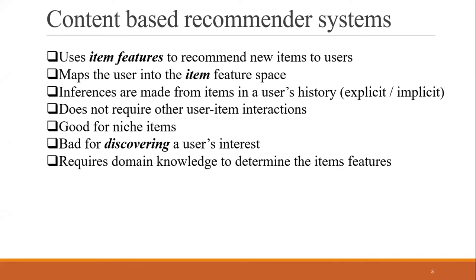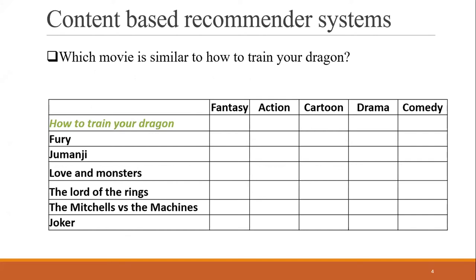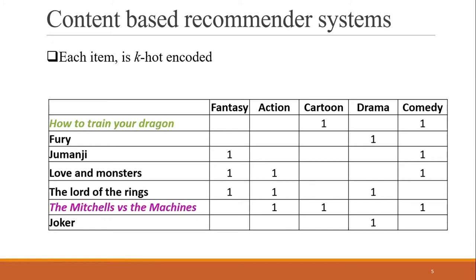A canonical example used in the literature is a rating system with movies. If we have a couple of movies and want to figure out which movie is most similar to How to Train Your Dragon, one way to look at it is to consider different genres — fantasy, action, cartoon, and so on — and figure out which are similar to How to Train Your Dragon. A domain expert would come in, go through the catalog and do some k-hot encoding to say How to Train Your Dragon is mainly cartoon comedy. You'd be looking for something with the closest overlap with that set, which in this small dataset would be The Mitchells vs. the Machines.